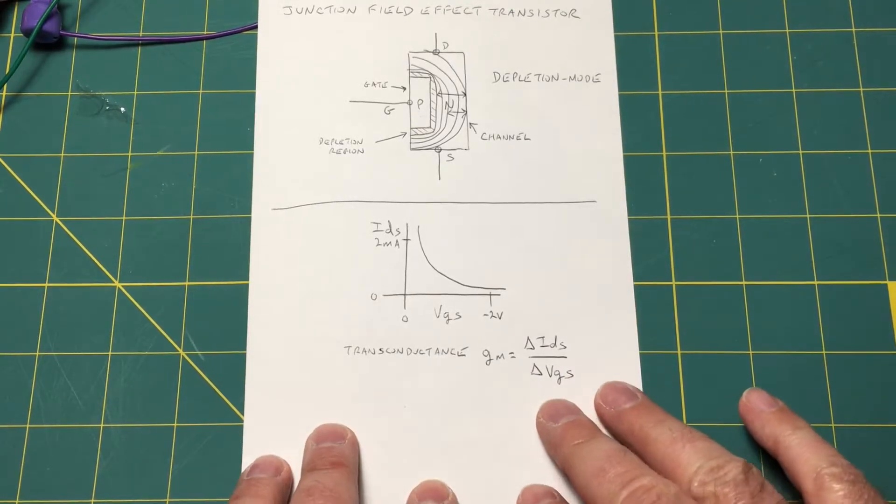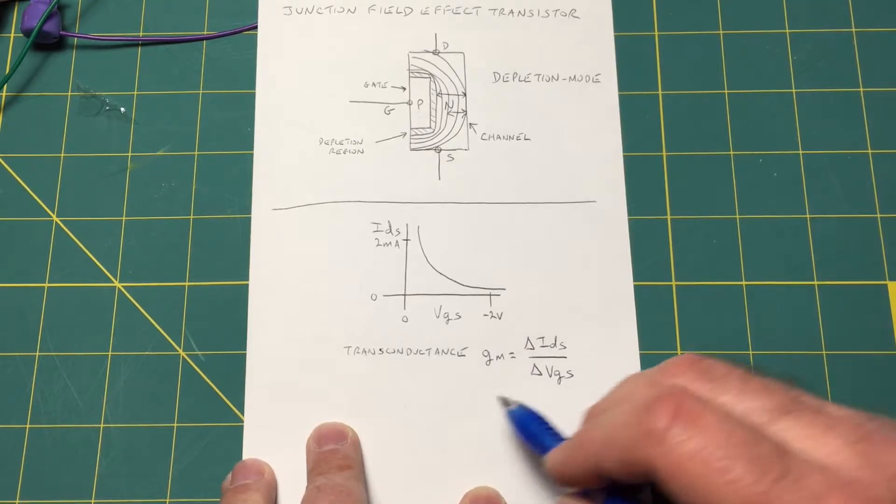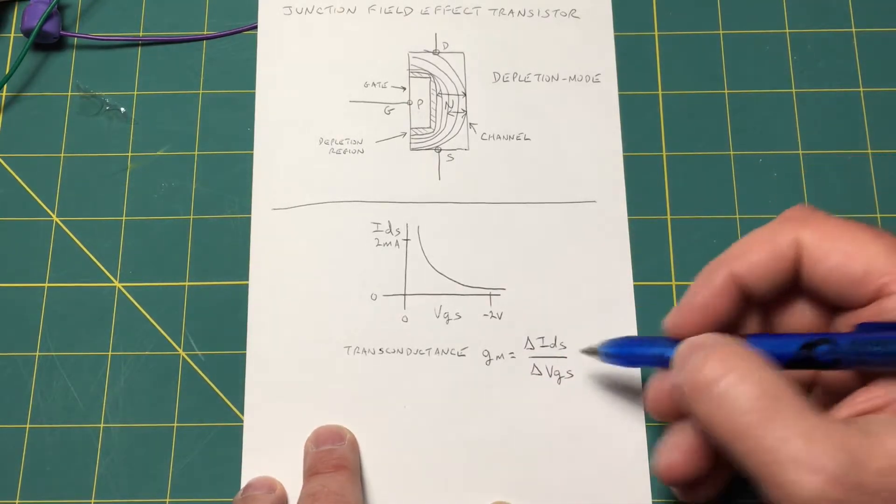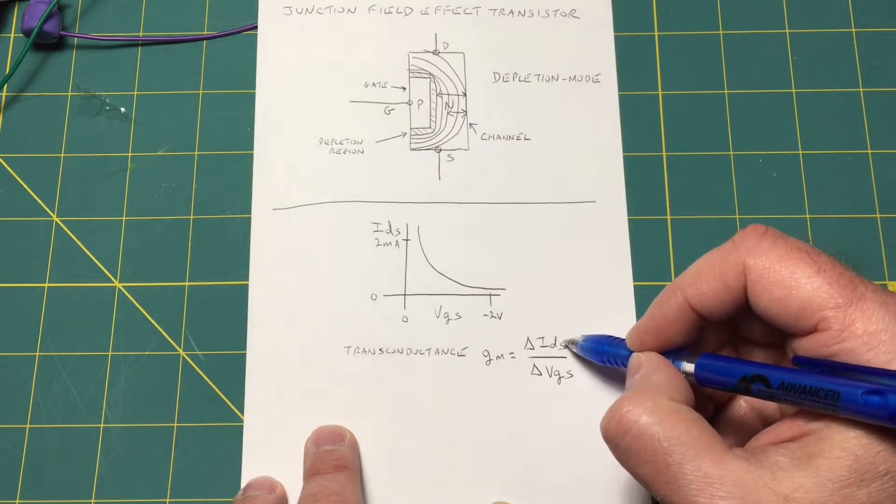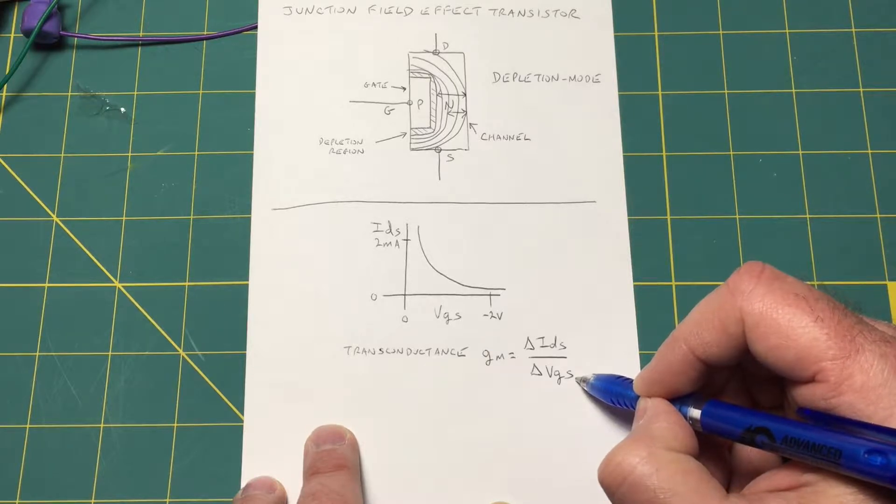Now the parameter of interest in a JFET or any FET for that matter is called transconductance. And transconductance is the change in current drain-to-source for any given change in voltage gate-to-source.